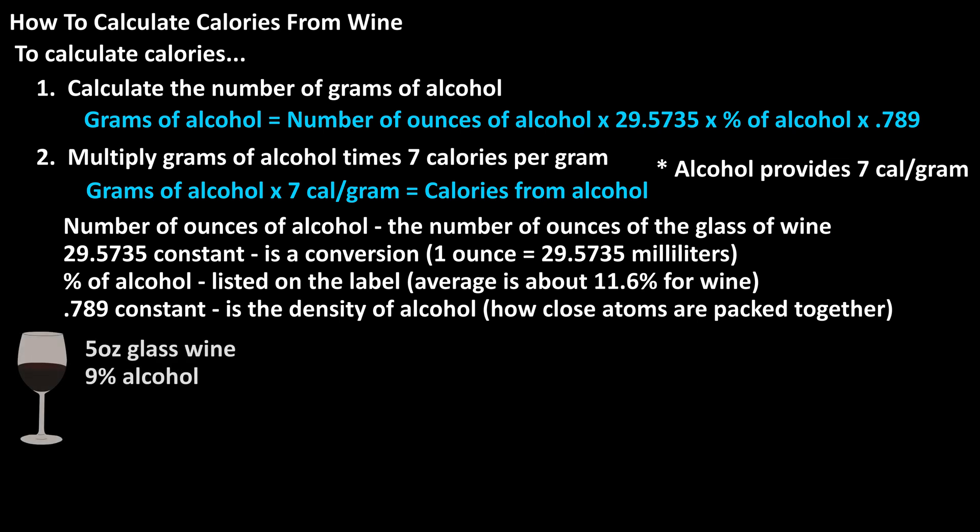Let's go through an example for a typical 5-ounce glass of wine that has 9% alcohol. We start by calculating the number of grams of alcohol. Using the formula, we have: grams of alcohol equals 5 — the number of ounces — times 29.5735, times 9%, the percentage of alcohol.